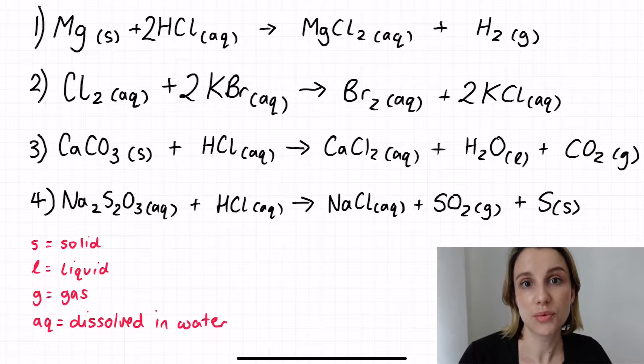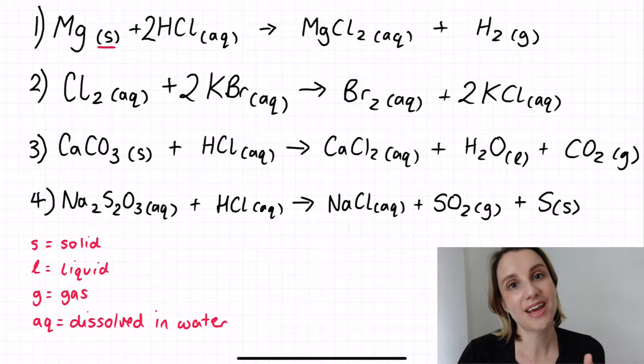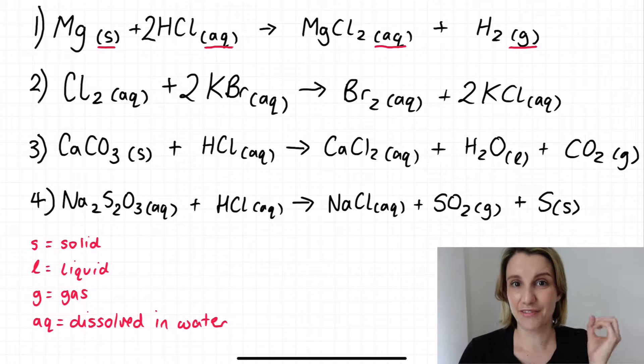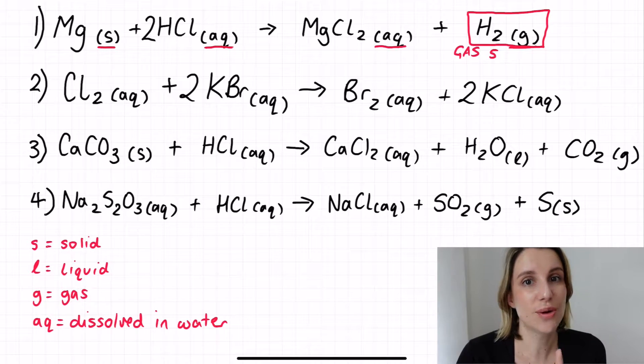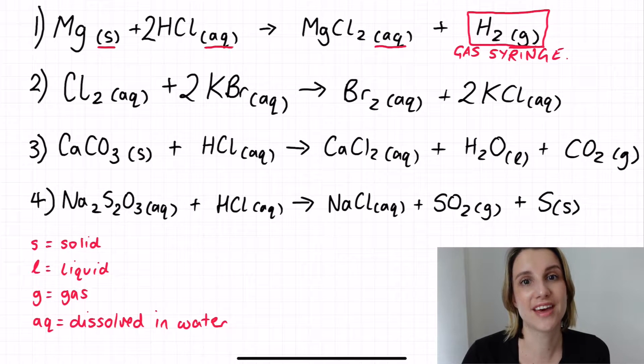In equation number one we can see that we're going from a solid and an aqueous thing on the left hand side to an aqueous and a gas on the right hand side. Now in my head I've got these sirens going off saying if you're making a gas you should always be looking at collecting that gas in a gas syringe. So if you're making a gas and you have no gases on the left hand side of the equation, then the first thing that you should think about doing is monitoring with a gas syringe. It's super easy and it means that we can measure how much gas is produced as the reaction goes on.